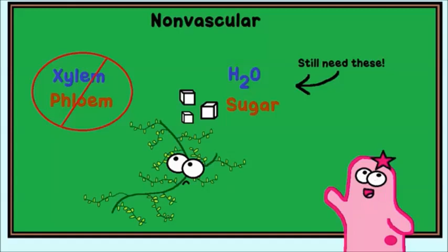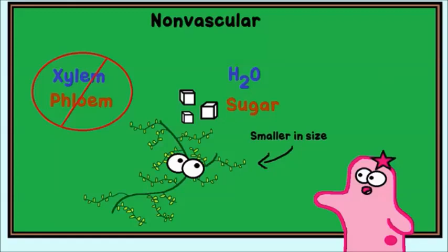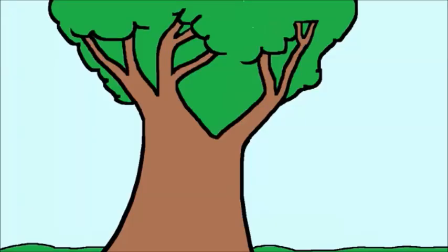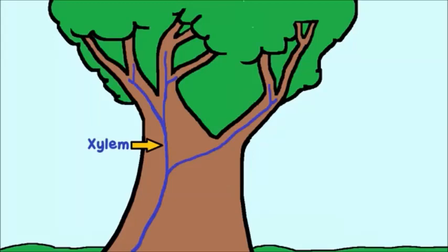It can't carry water upwards in the xylem because it doesn't have one. That means non-vascular plants typically are limited in size. A giant tree needs a xylem for water transport. That water is being carried against gravity.